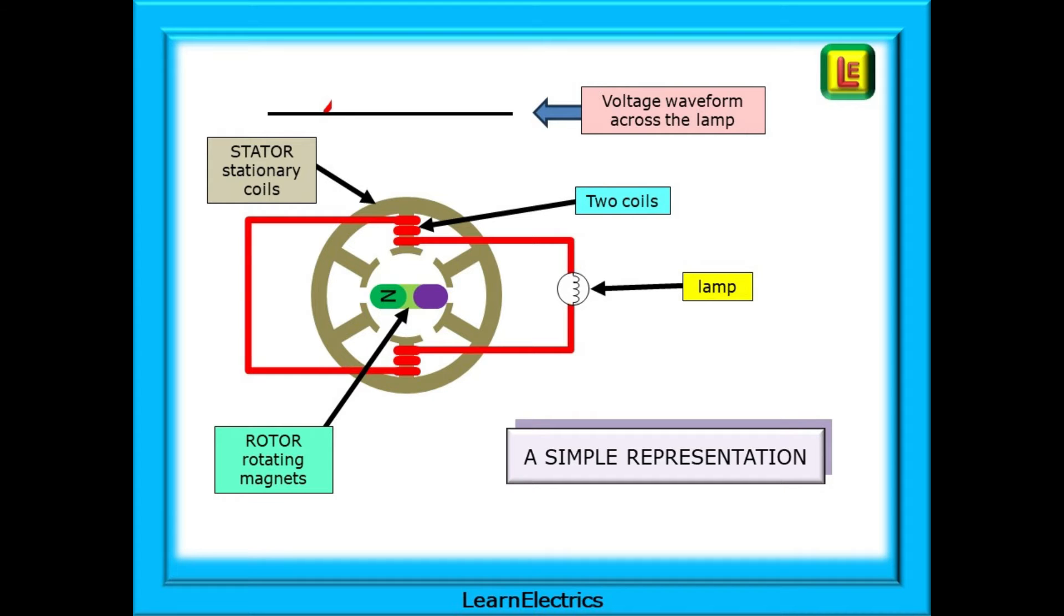Shown here is the stator, the stationary part of the generator. Mounted on the stator will be several electrical coils in pairs as you can see. There is a rotor that rotates, and this is basically a big magnet or series of magnets. The rotor will rotate at a fixed frequency so that in the UK, for example, the output frequency will be 50 Hertz or 50 cycles per second. To complete the circuit in this very simple example, we've shown a lamp that will illuminate as electricity is generated.